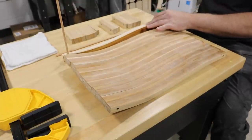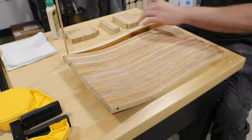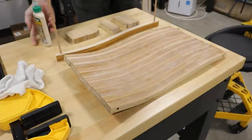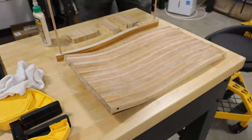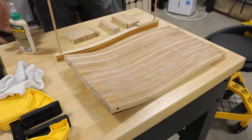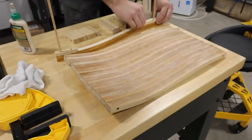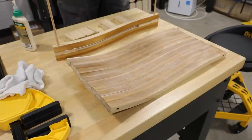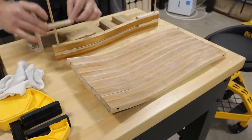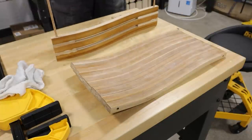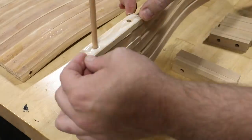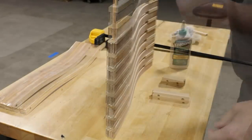For the glue-up, I decided to use Titebond 3. The slightly longer set times and water-resistant qualities were welcome during this step. The spacers are about a sixteenth inch thicker than the slats.